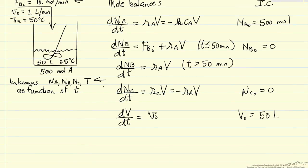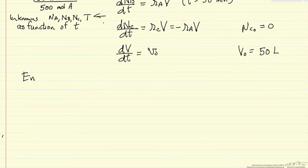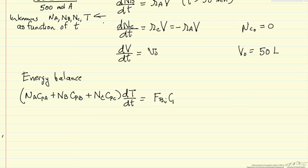The next thing we want to do is write down the energy balance for this system. Energy balance needs to take into account the flow into the reactor and the heat of reaction. Reactor temperature is changing, and we're heating up all the contents. So the number of moles of A times the heat capacity of A, plus the number of moles of B in the reactor times the heat capacity of B, plus the number of moles of C times the heat capacity of C, times the derivative of temperature in the reactor as a function of time. We have the flow rate of B into the reactor times the heat capacity of B times the temperature inlet minus the reactor temperature.